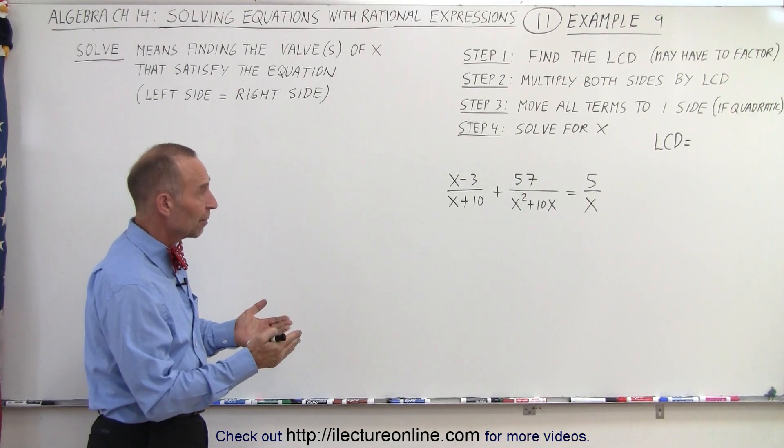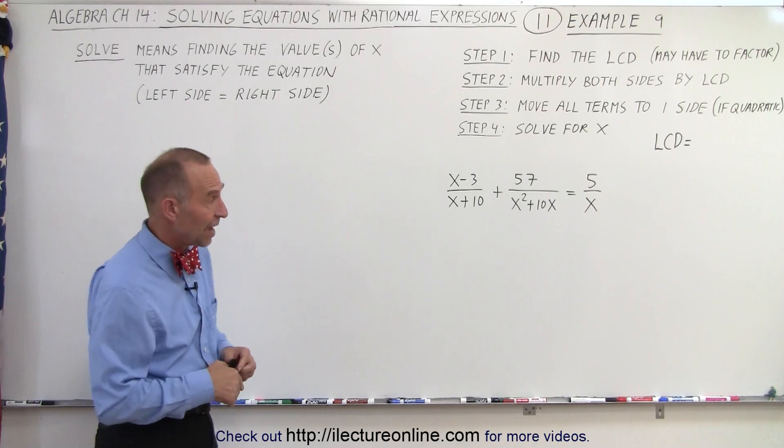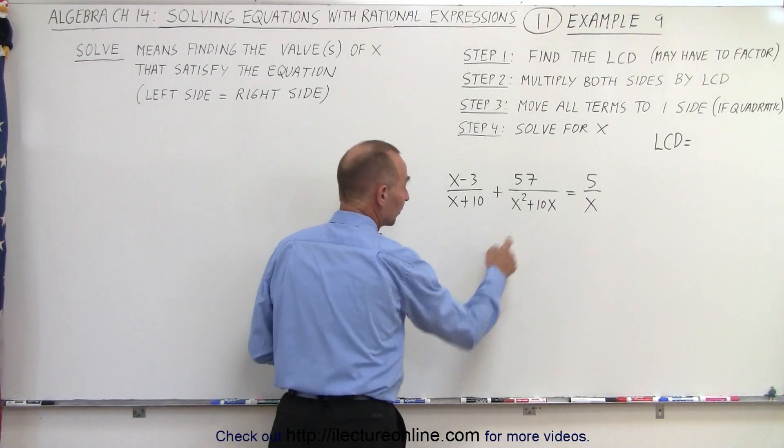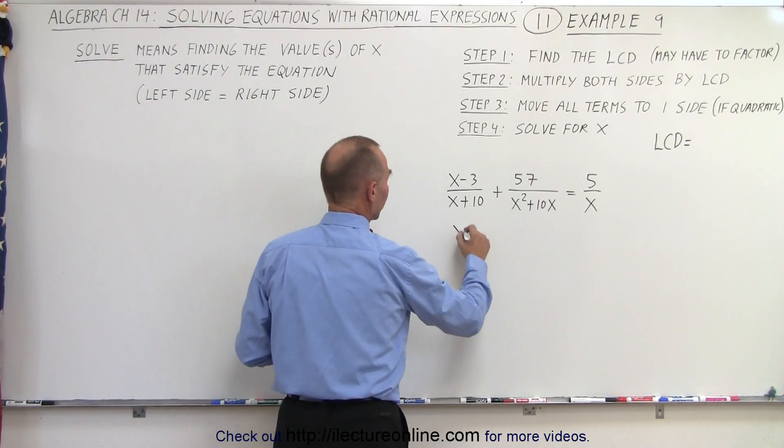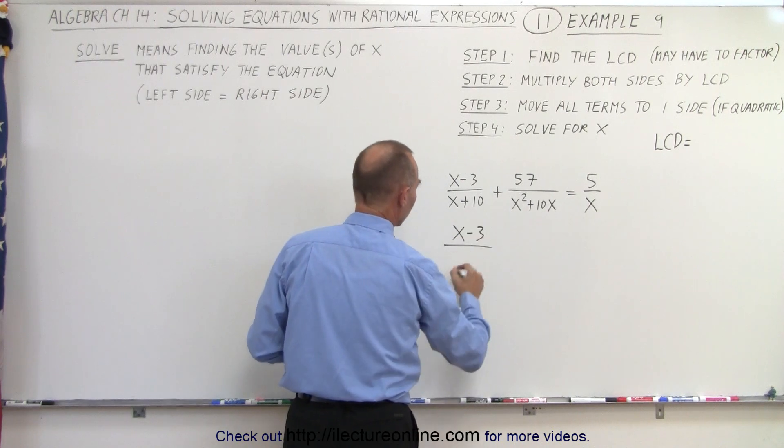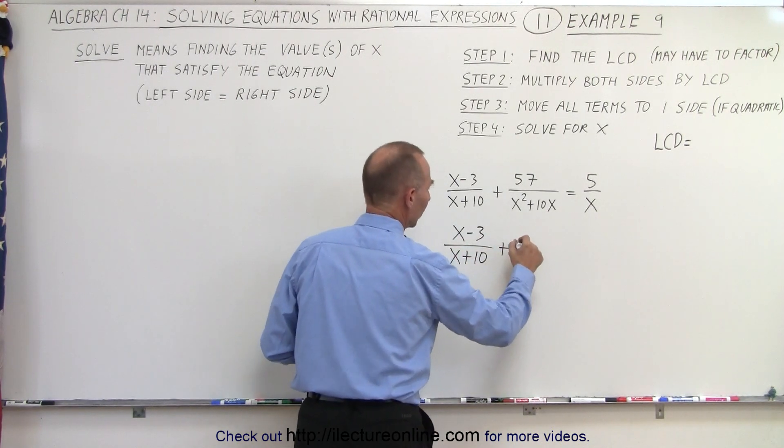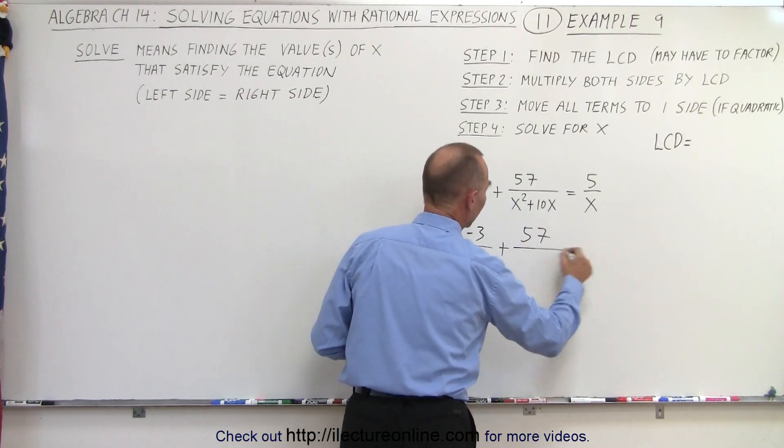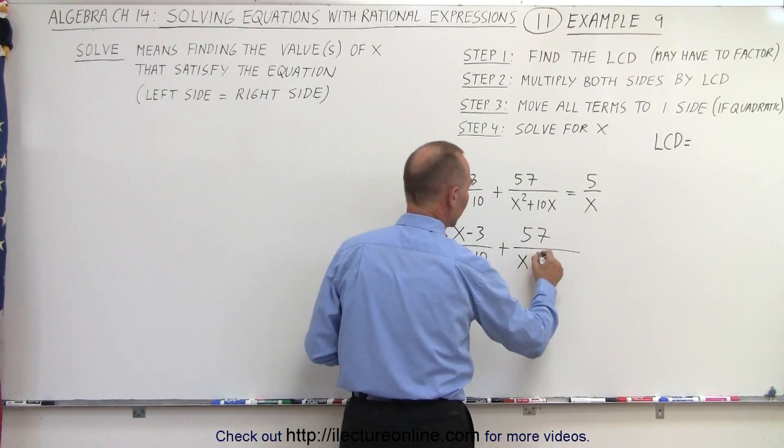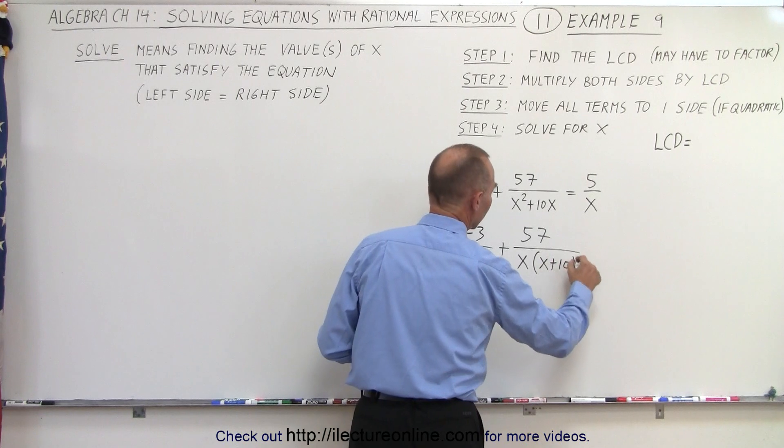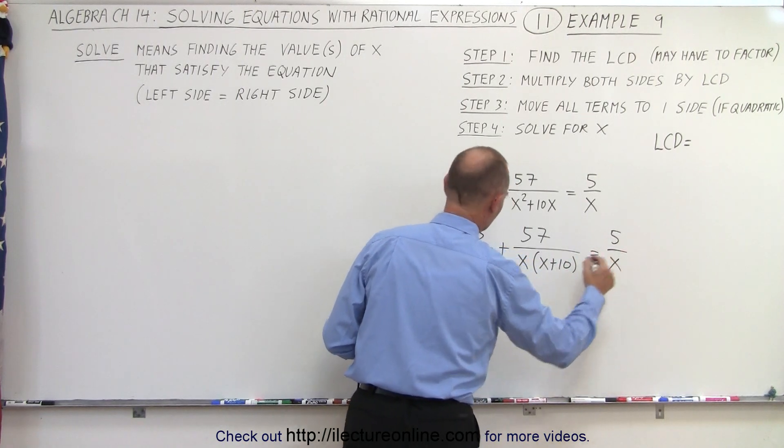First of all, before we can come up with the lowest common denominator, we're going to have to factor one of our denominators right here. So let's do that. This becomes x minus 3 over x plus 10. That doesn't change. Plus 57 divided by, we can factor out an x and we're left with an x plus 10 equals 5 over x.